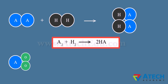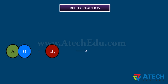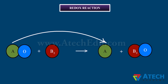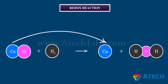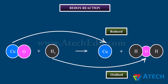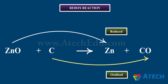Reduction is a reaction involving addition of hydrogen or removal of oxygen from a substance. Redox reactions involve both oxidation and reduction simultaneously — one reactant gets oxidized while the other gets reduced. For example, copper oxide loses oxygen and is reduced, while hydrogen gains oxygen and is oxidized. Another example is carbon being oxidized to carbon monoxide while zinc oxide is reduced to zinc.